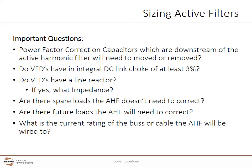There are some important questions which need to be answered when sizing active harmonic filters. If there are power factor correction capacitors downstream of the active harmonic filter — that is, between the active harmonic filter and the VFDs — they will need to be removed. Do VFDs have an integral DC link choke of at least 3%? Many VFDs below 10 horsepower do not have DC link chokes, so they will probably need line reactors. Do the VFDs have a line reactor, and if yes, what is the impedance? Are there spare loads that the active filter doesn't need to correct for, like across-the-line start motors or resistive heaters? Are there future loads the active harmonic filter will need to correct for? And what is the current rating of the bus or cable the active harmonic filter will be wired to, so the current sensors can be accurately sized?